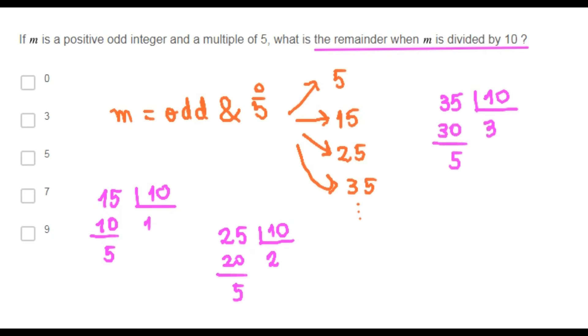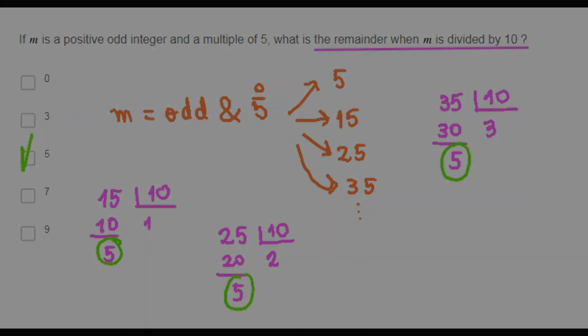As you can see, the remainder is always 5. Therefore, choice C is correct.